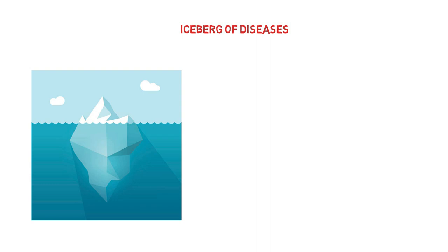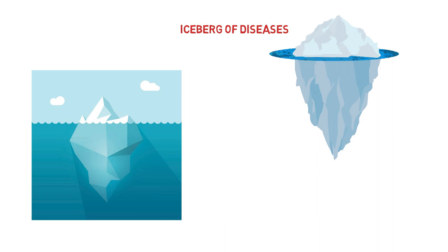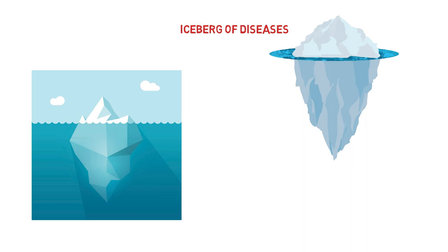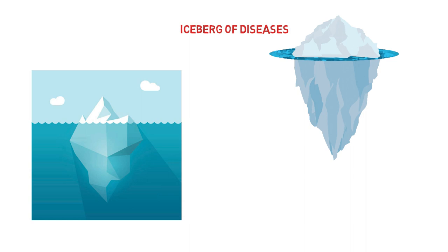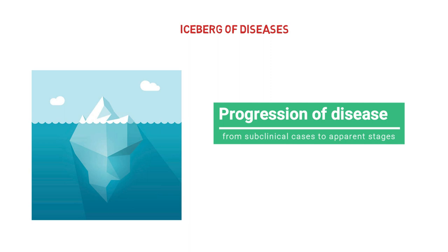So what is iceberg? Iceberg is a large piece of freshwater ice that has broken off a glacier or an ice shelf and is floating freely in open, or we can say in salt water. The study of the iceberg phenomenon of disease tells of the progression of a disease from its subclinical stages to apparent disease stage.